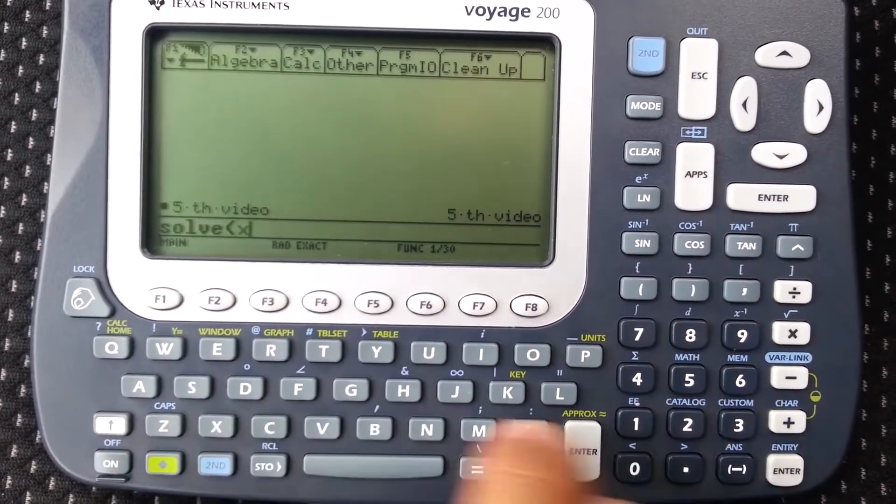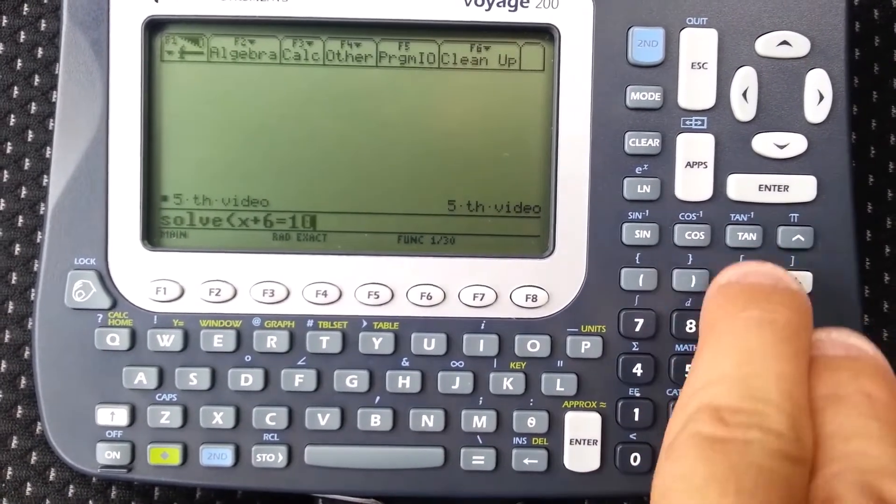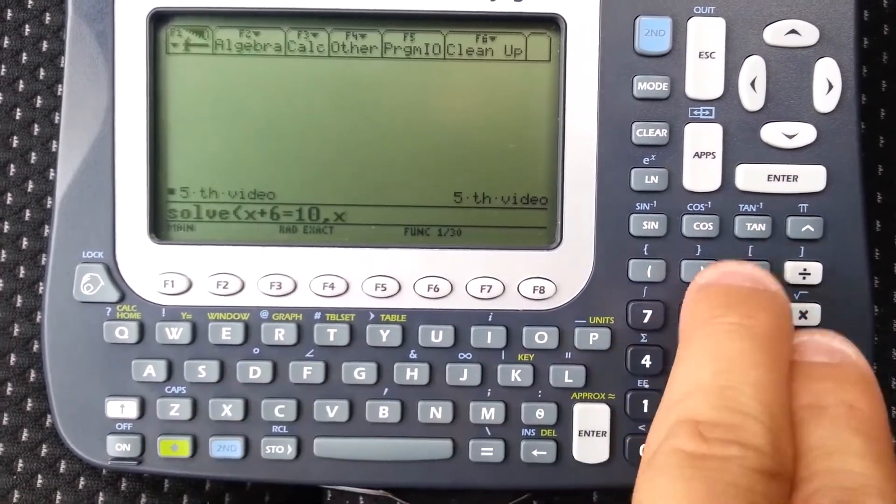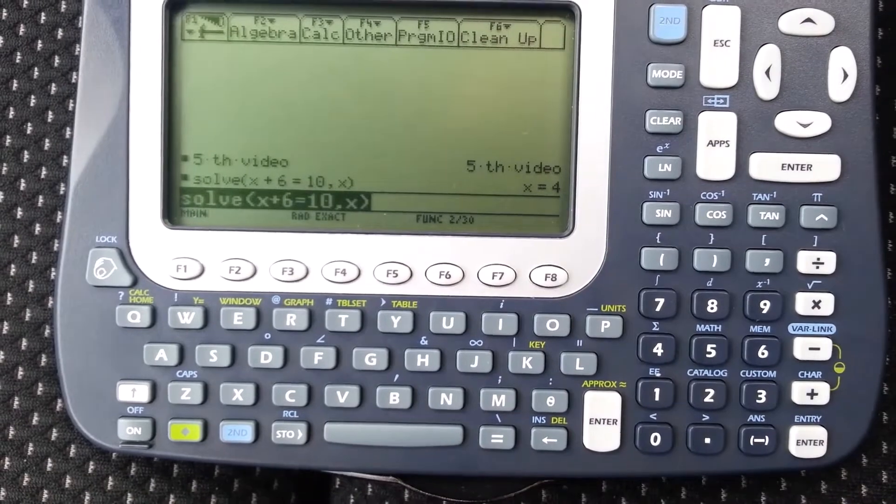So if you have x plus 6 equals 10, you solve for x, you get x equal 4.